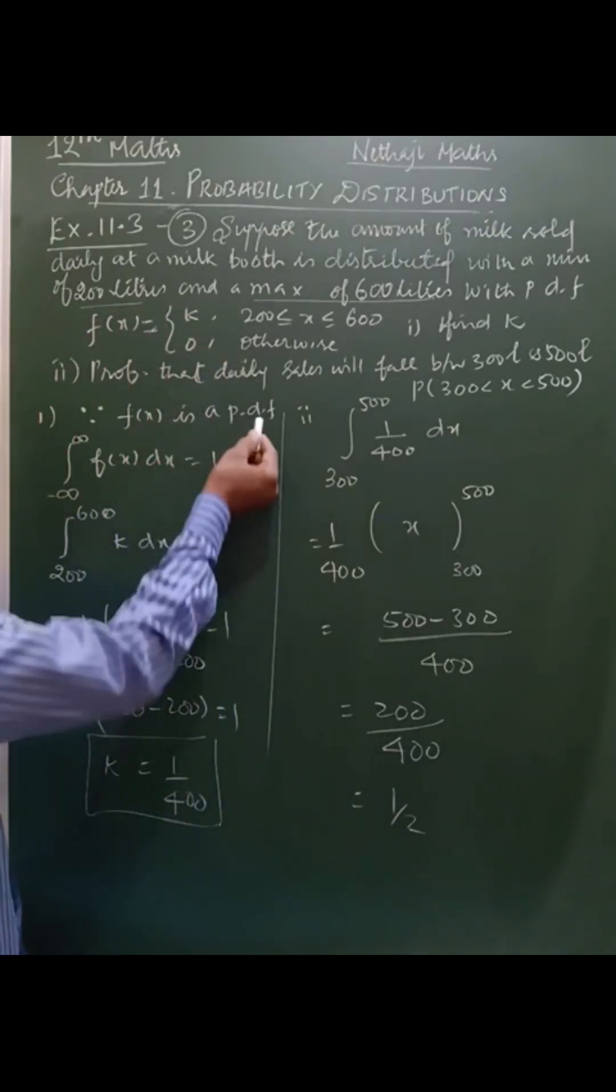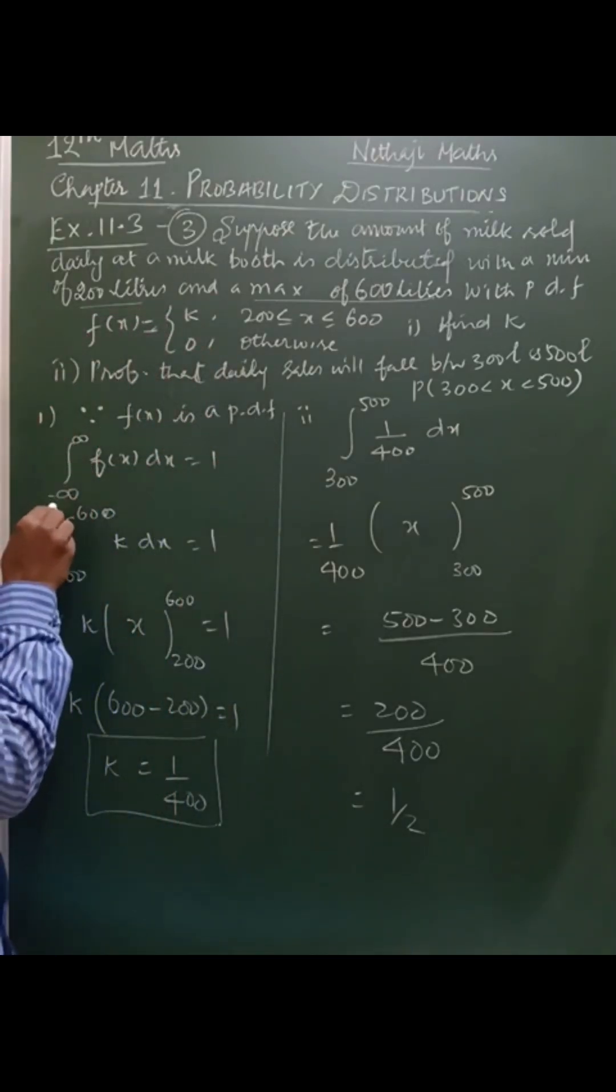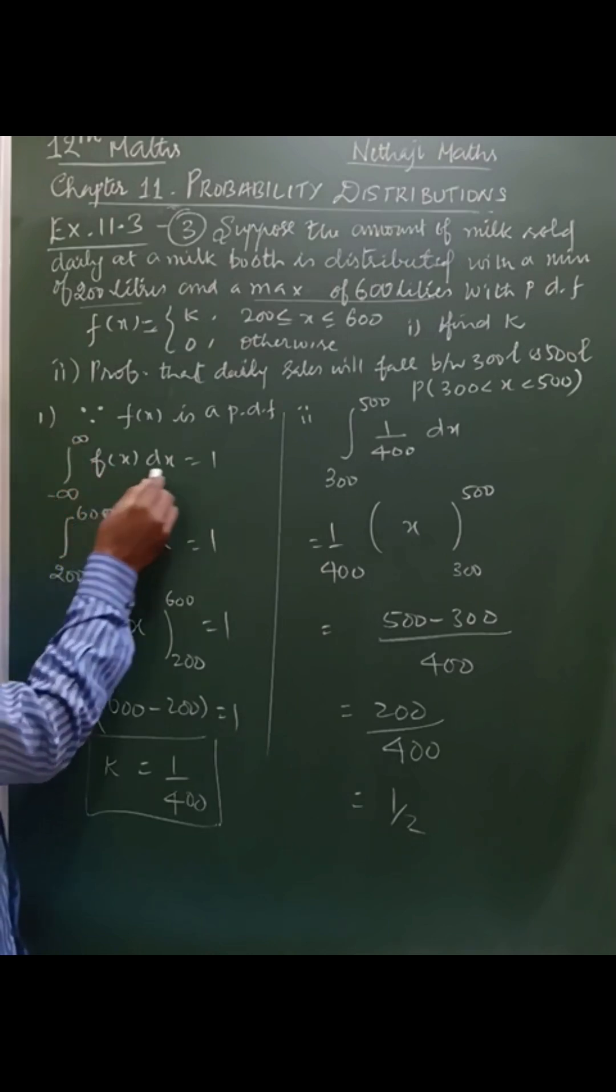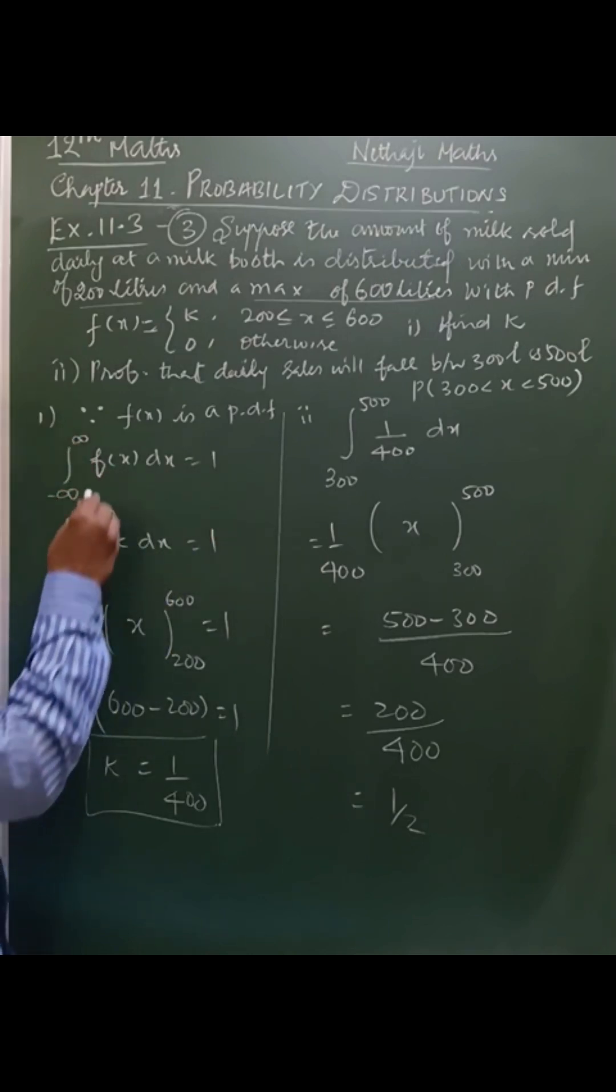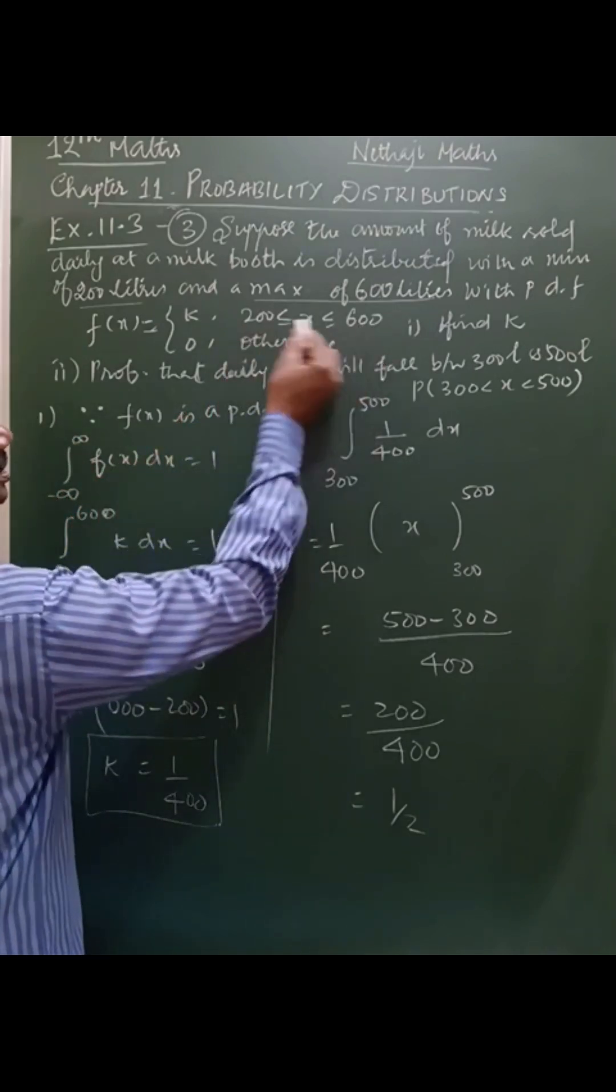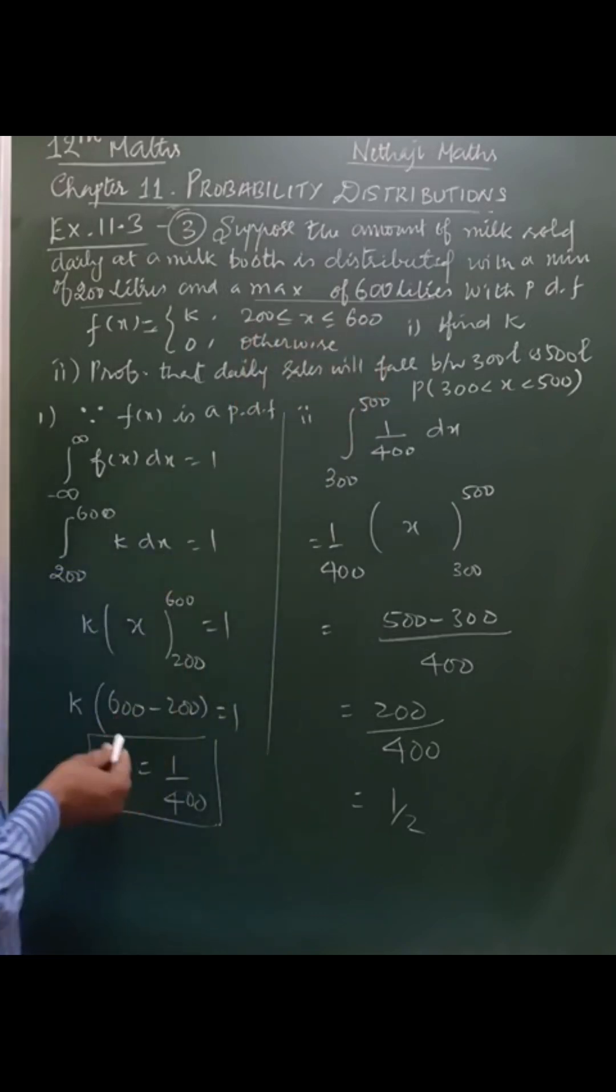Since f of x is a PDF, the formula is integral minus infinity to plus infinity f of x dx is equal to 1. But in our question, the function is defined between 200 to 600.